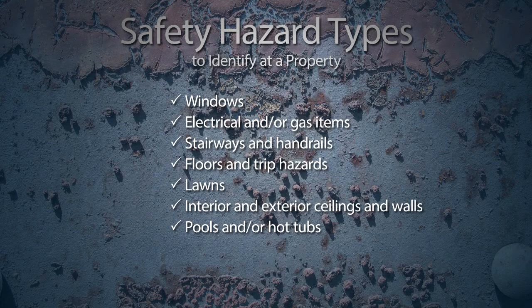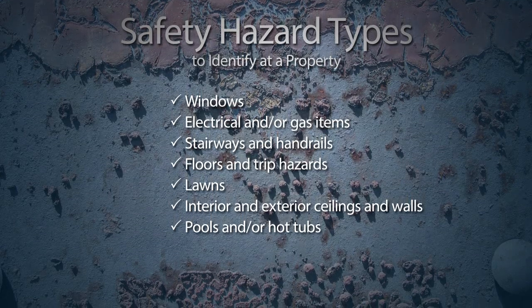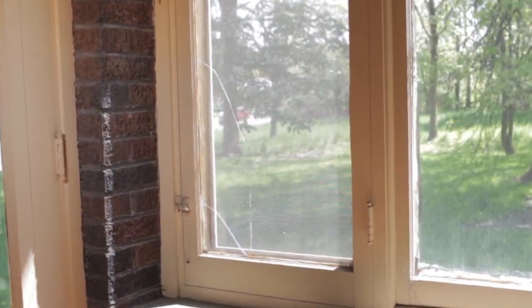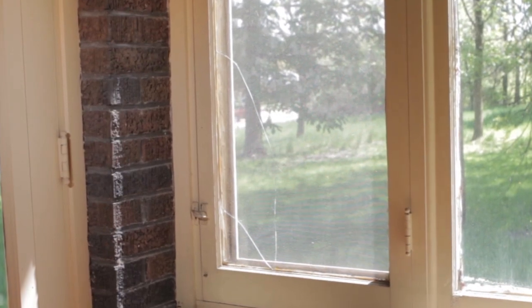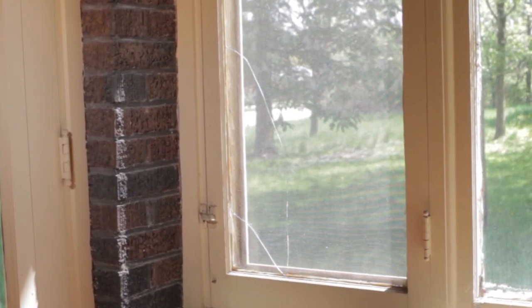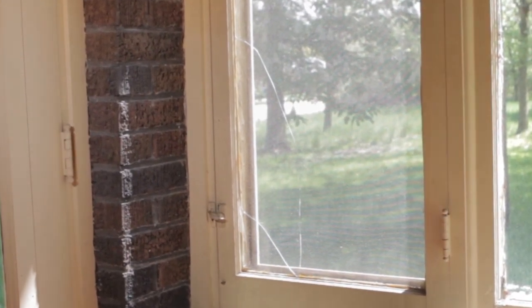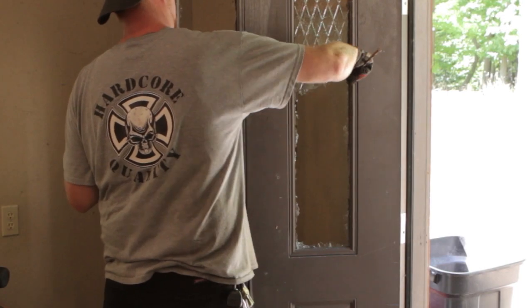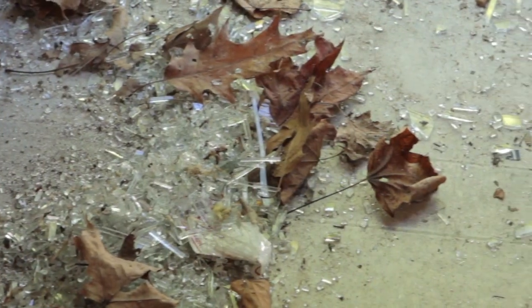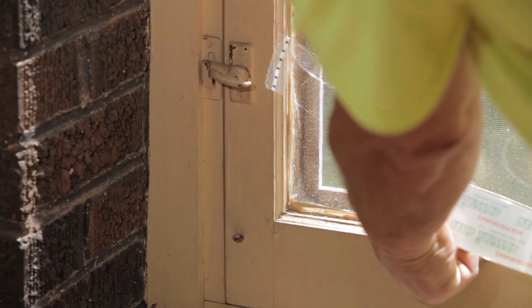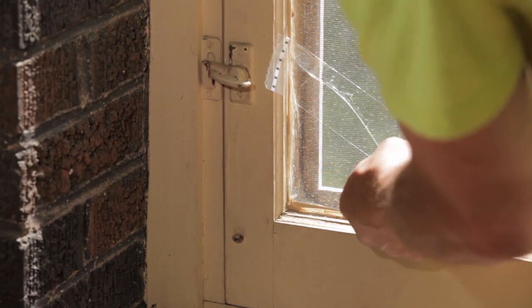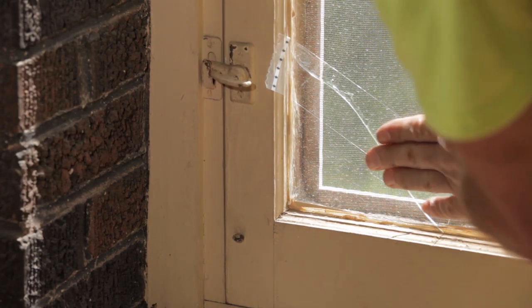The first safety hazard location we will look at is windows. You must inspect each window, including doors, at the property for broken glass and cracks. All broken glass must be completely removed from the frames, sills, and ground. If any portion of a window is cracked, you are required to tape it with clear tape only.